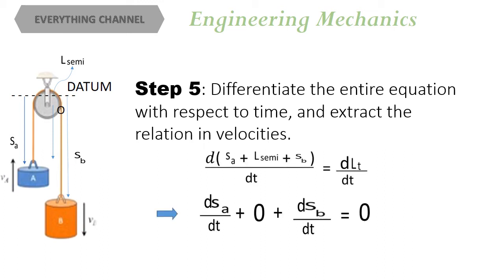That is, D of SA upon DT plus 0 plus D of SB upon DT equals 0, and D of SA upon DT is velocity VA, and D of SB upon DT is velocity VB. And this becomes VA plus VB equals 0, or VA equals minus VB. And this proves our initial guess that the two particles move in opposite directions with the same speed.